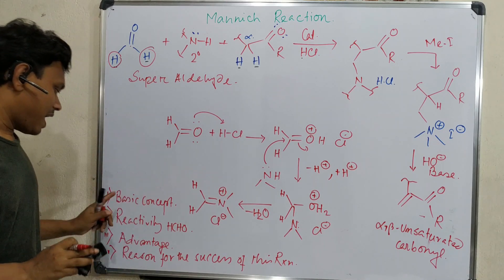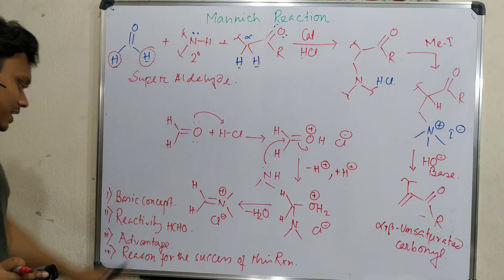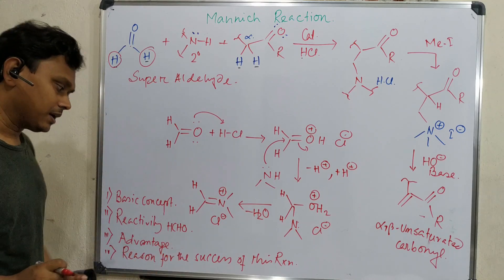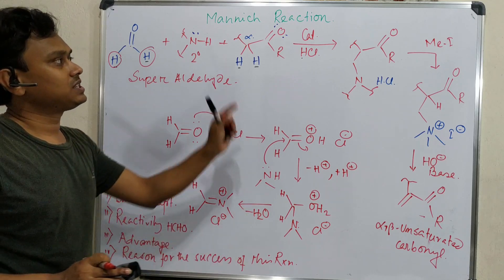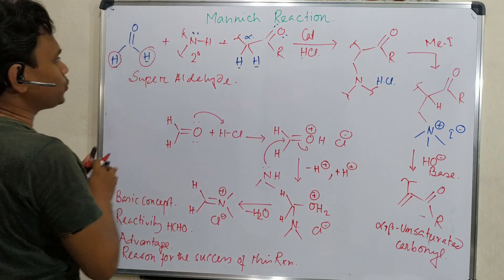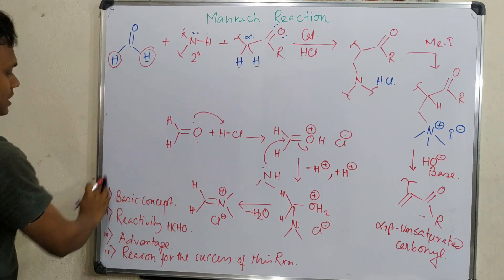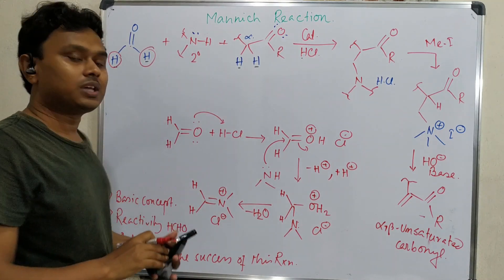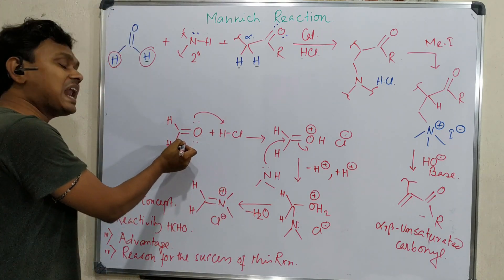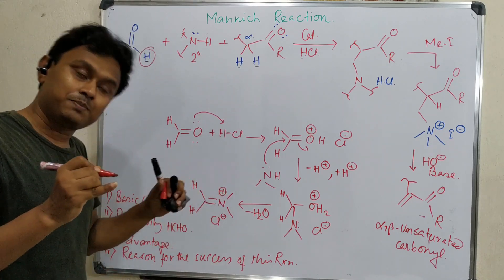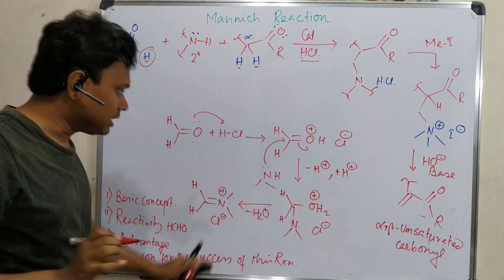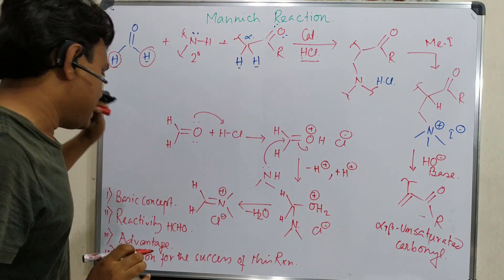What we are going to discuss today about the basic concept of this Mannich reaction, second is reactivity of formaldehyde which I have explained, advantage of this reaction, and finally the reason for the success of this Mannich reaction. So it is essential to reduce the reactivity and perform the reaction. Since I have explained in alkaline condition what is happening, so it is better to use an acidic medium. That is the reason to follow this HCl thing.